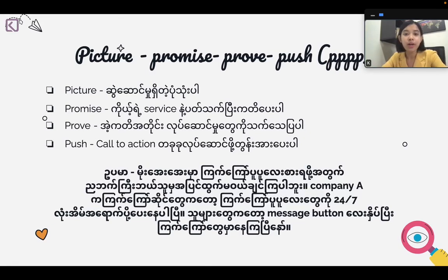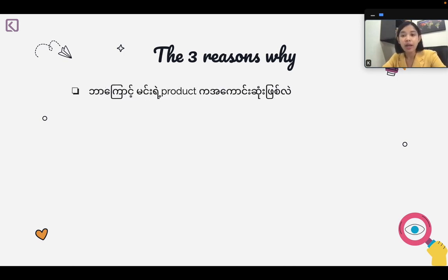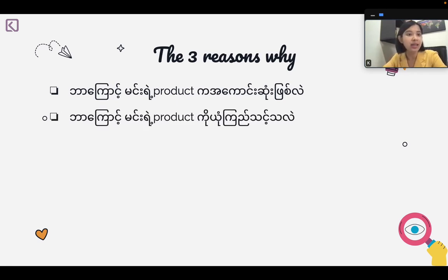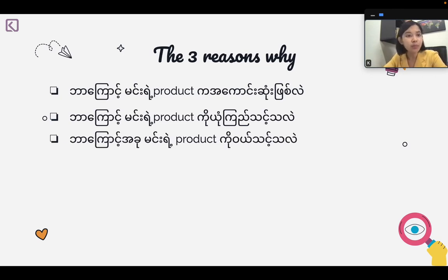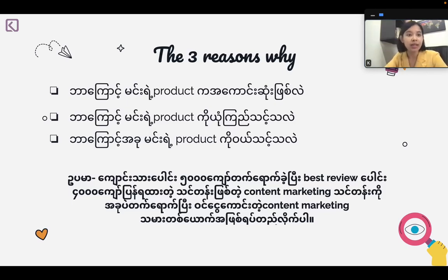Now let us look at the formula — three reasons why. I want you to go to the website that has to be made cheaper. Many of these people are using this product as well. The individual who is not a high-quality product, they can buy this product. This is the three reasons why it is just to get our product.